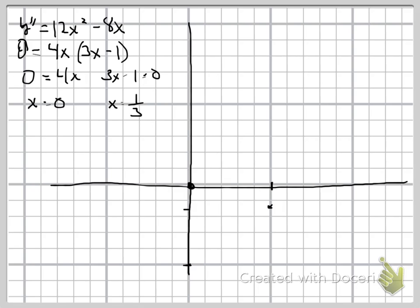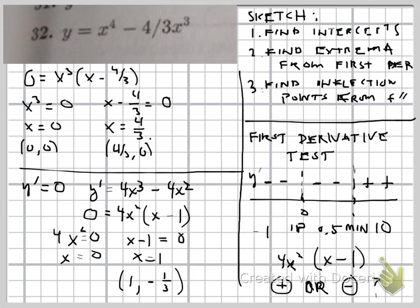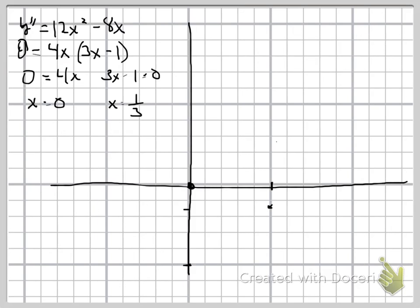So we're going to put a point there. And the tricky thing is that we have an inflection point. If we look back at the slope, we're decreasing all the way until we reach this point, 1 comma negative 1 third. And then it's going to be increasing from that point. So that's pretty easy to see.